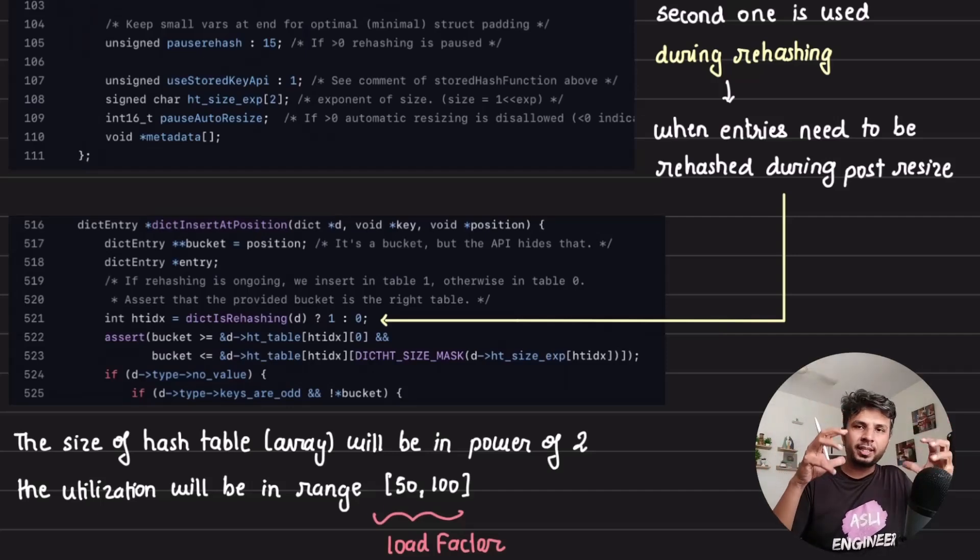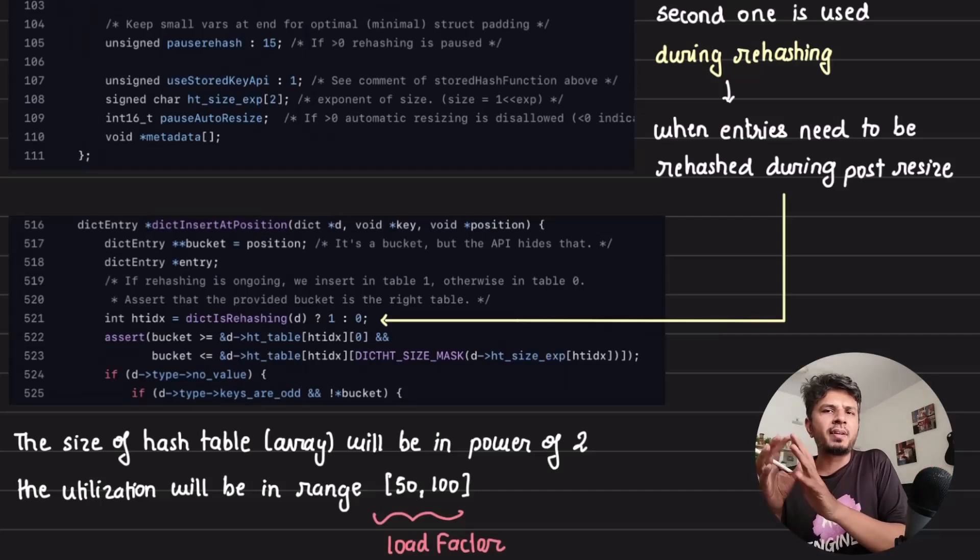Typically the size is always doubled when load factor goes above 50 to 75 percent. Average load factor utilization is 50 to 100 percent and the hash table is always doubled in size. This will come in handy when calculating the overhead. It's going to be a pretty interesting video.